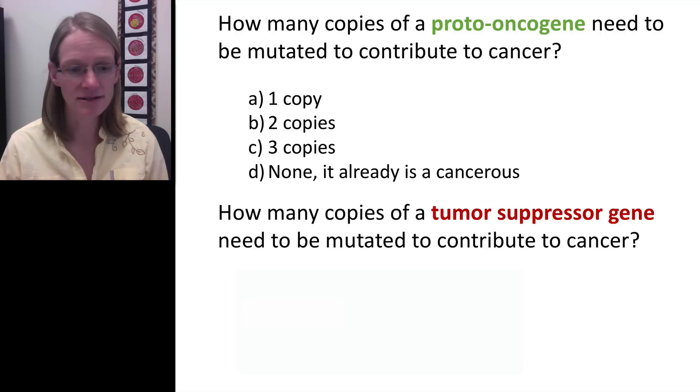And so we can start out with these couple of questions. And the first one being, how many copies of a proto-oncogene do you need to be mutated to contribute to cancer? And hopefully you already figured out that it's only one copy because we know that it is a dominant type of gene. And so you really only need to have one of these mutations and it will keep doing the things that it is actually doing.